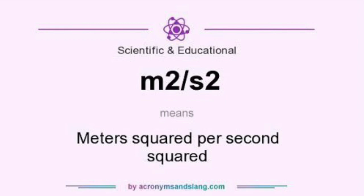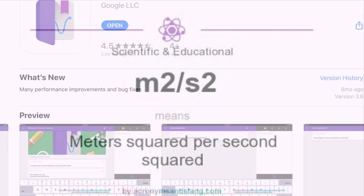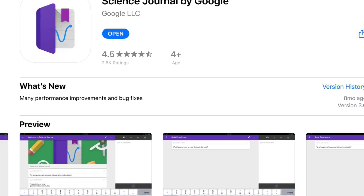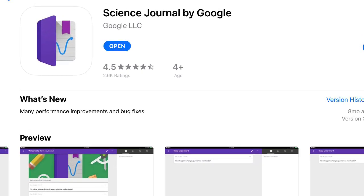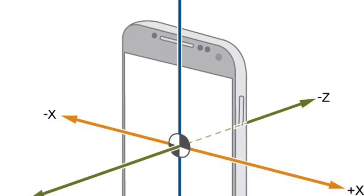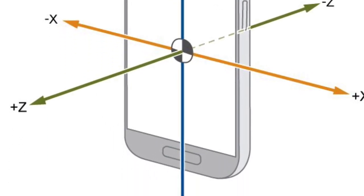You will use meters per second squared to determine the acceleration of the structure. Google's Science Journal app makes this easy by utilizing the accelerometer built into many modern cell phones and tablets. Today you're going to build two things: one, an earthquake simulator, and two, a structure to put on top of that earthquake simulator. Let's begin with the earthquake simulator.